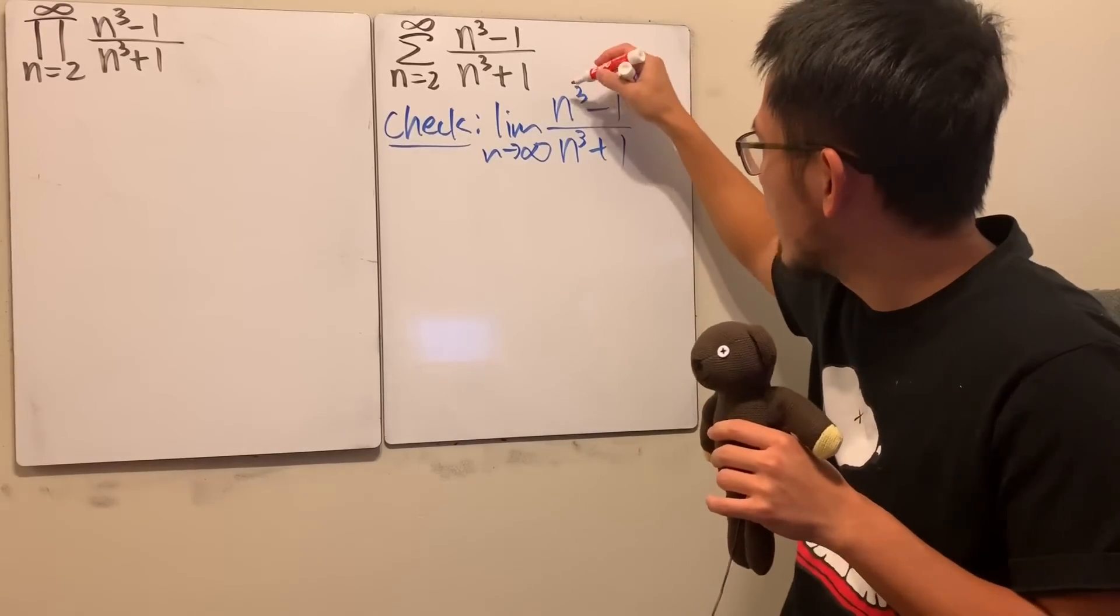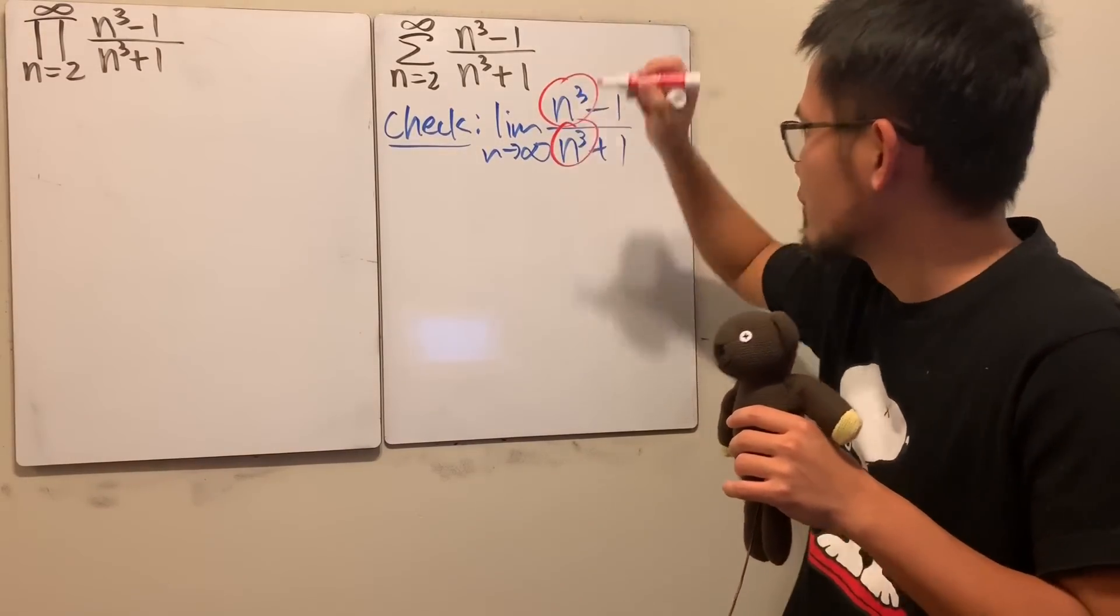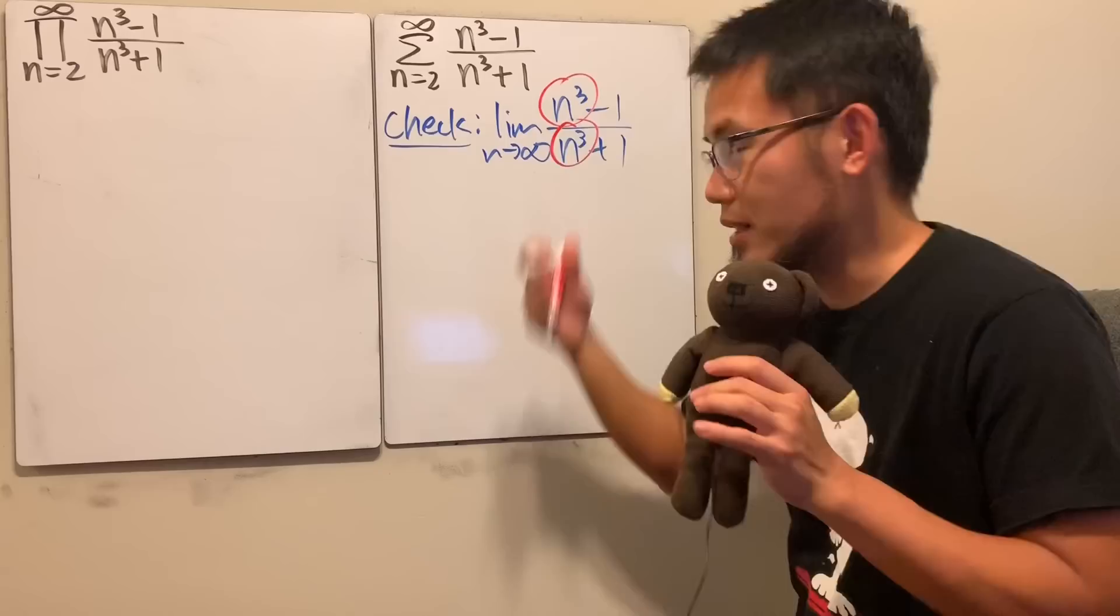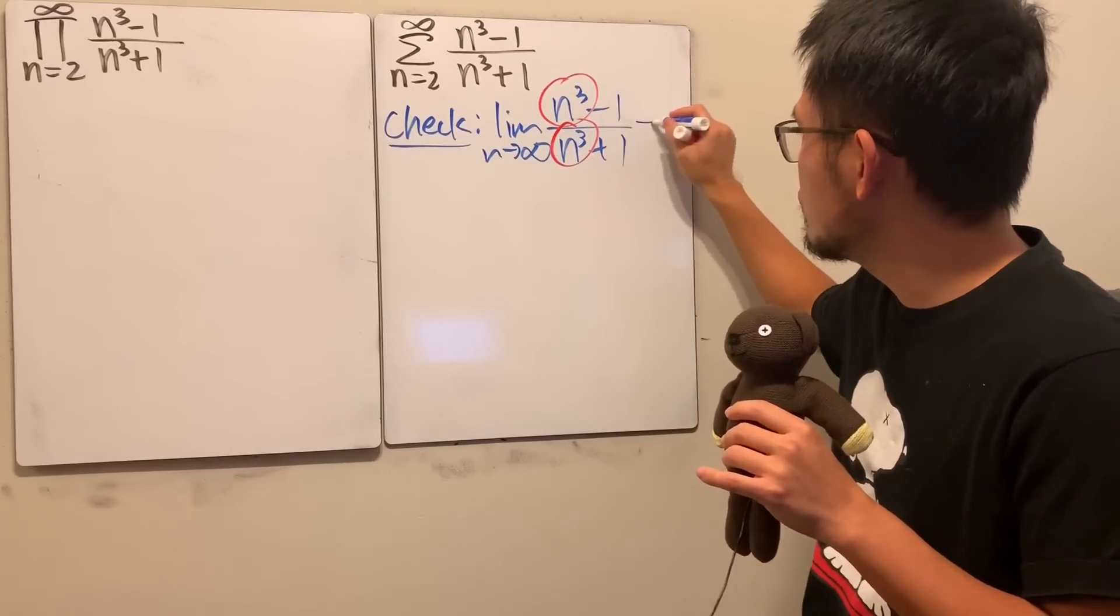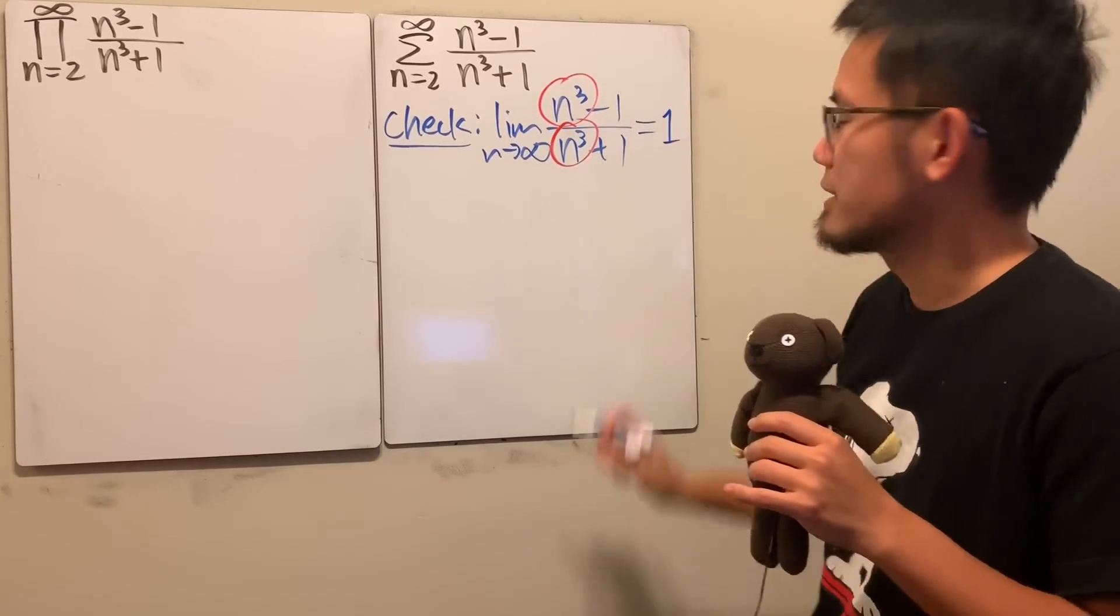Well, we just need to care about the highest power of n and also the n right here, which they have the same degree. We can reduce that out, which you just end up with 1, so that's very nice.